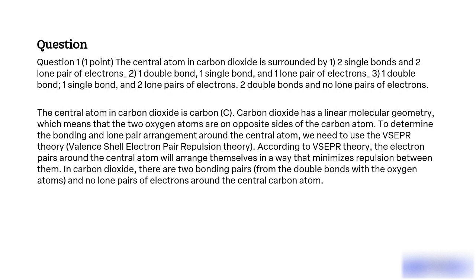To determine the bonding and lone pair arrangement around the central atom, we need to use the VSEPR theory (Valence Shell Electron Pair Repulsion theory). According to VSEPR theory, the electron pairs around the central atom will arrange themselves in a way that minimizes repulsion between them.